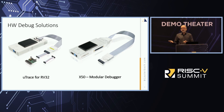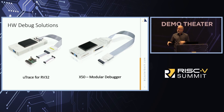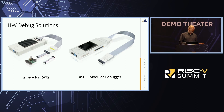Next to it we have the X50, our modular debugger. The cool thing about this is it will work across multiple architectures. So you can debug your RISC-V, both 32 and 64-bit, but if you have ARM on your SoC you can use the same debugger, same cable. You'll need to talk to the sales guy about licensing.